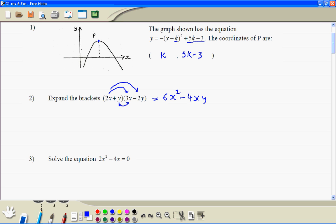Then we multiply everything in the second bracket, this y. So we get 3x times y, then we get y times minus 2y, minus 2y squared.